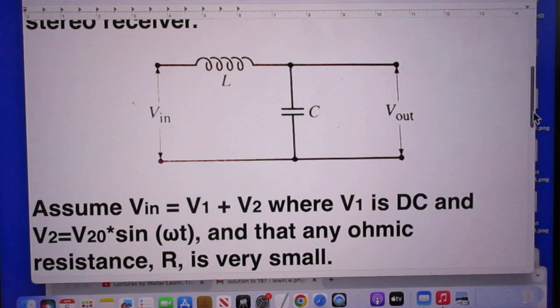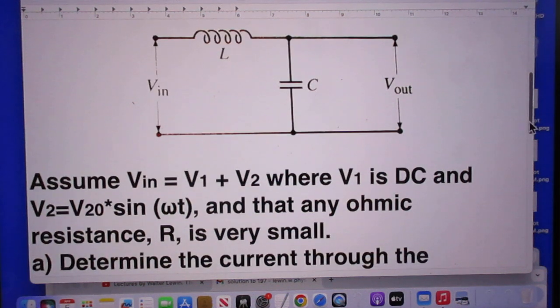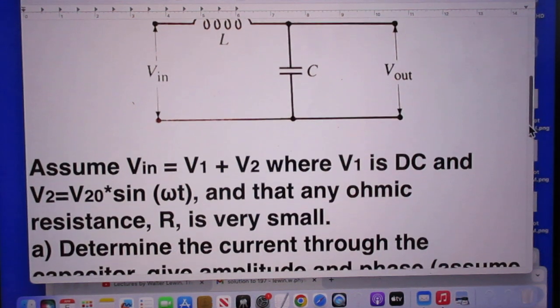Notice there is no resistance in that system, and we will have to assume that the resistance is indeed very small. Assume that Vin is V1 plus V2, where V1 is DC and V2 is V20 sin(ωt), so that's the AC component, and that any ohmic resistance R is very small.